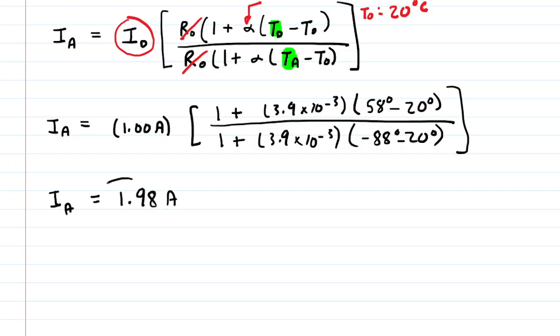And lo and behold, notice that we have almost doubled the current. It went from one amp to basically two amps. And that is again, because in Antarctica, the temperature has gone down. That drop in temperature lowers the resistance of the copper wire, and that allows more current to travel through it.